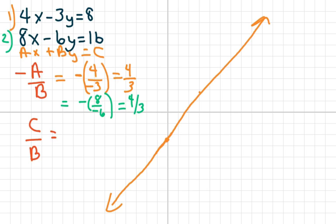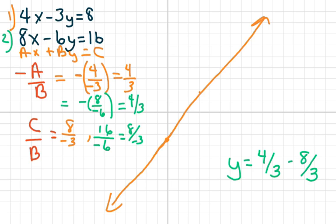Now, let's check the y-intercept. The y-intercept is c over b, so that's just going to be for number one, 8 over negative 3, and for number two, that's going to be 16 over negative 6, which reduces to 8 over negative 3. So basically, we could rewrite this as y = 4/3 x - 8/3. They're basically the same line, so they just sit on top of one another.